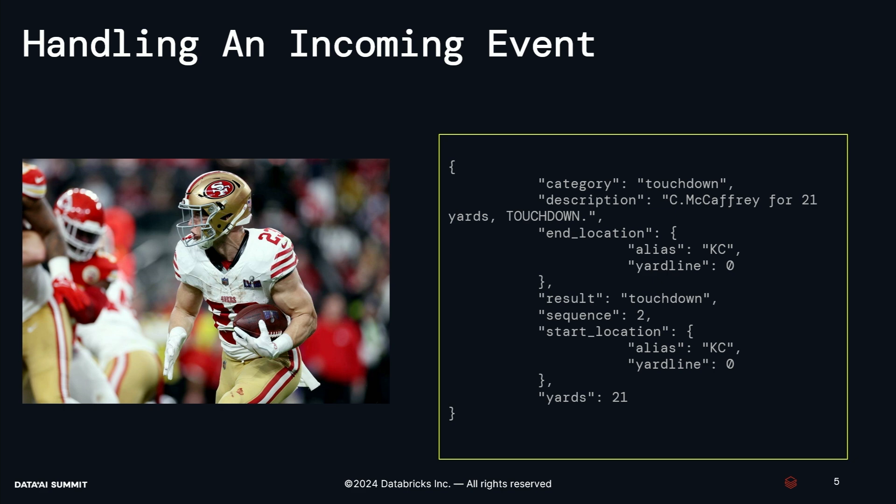I'm sure people who watched Super Bowl 58 remember Christian McCaffrey's 21-yard touchdown in the second quarter to give the 49ers a 10-nil lead — any 49ers fans, we can just pretend the game finished there. So what happens between that event occurring in the real game and our production systems?